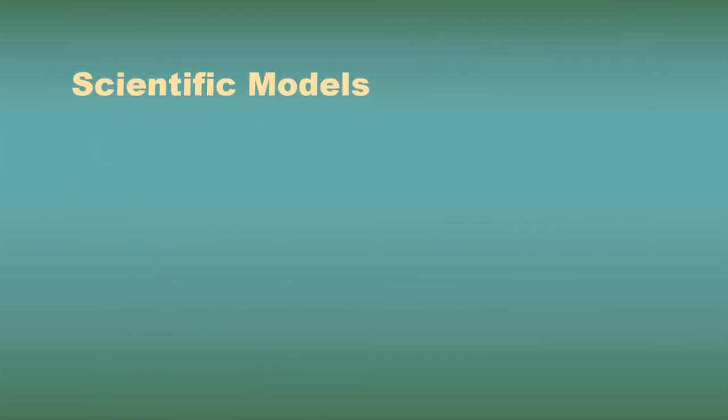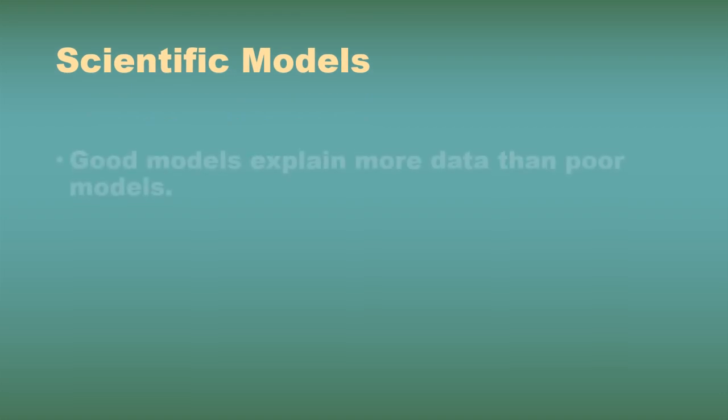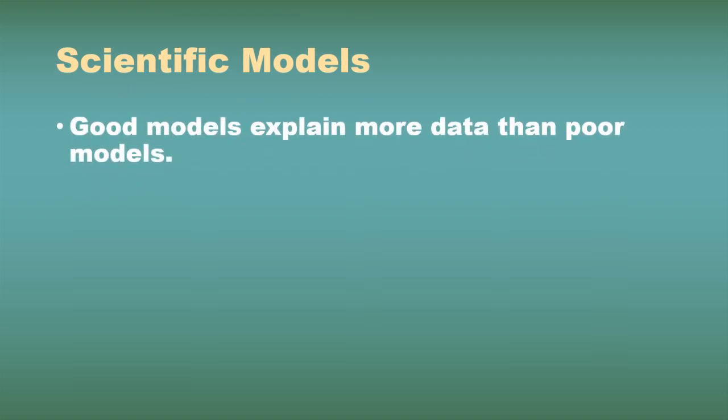All right, so scientific models then. Good models explain more data than poor models. And that's just the basis of model building, model construction, model selection. A model that explains 10 pieces of data is better than a model that explains only 9 or 8. And yes, it is usually that simple in terms of sorting things out and reasoning through stuff.